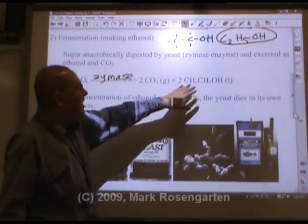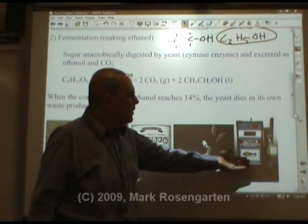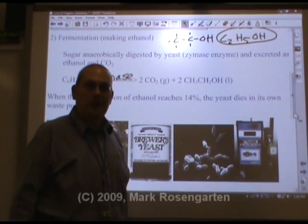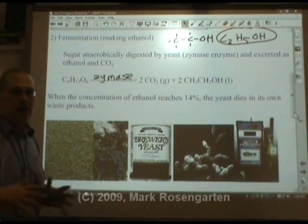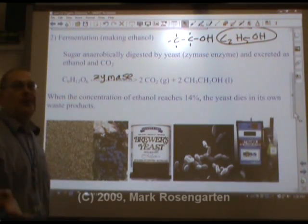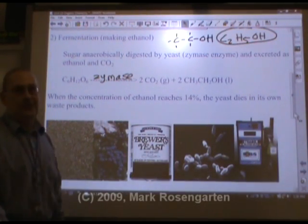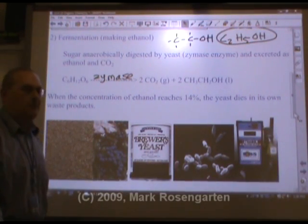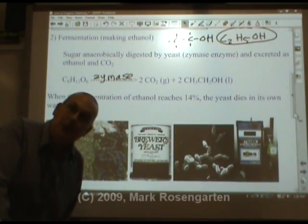Ethanol can be used as E85 flex fuel — the source of sugar for E85 flex fuel is corn. You can also make wine, beer, and other alcoholic beverages out of this same process, which is why it's called brewer's yeast. It's a very lucrative product, but you have to be careful because the stuff is also toxic.